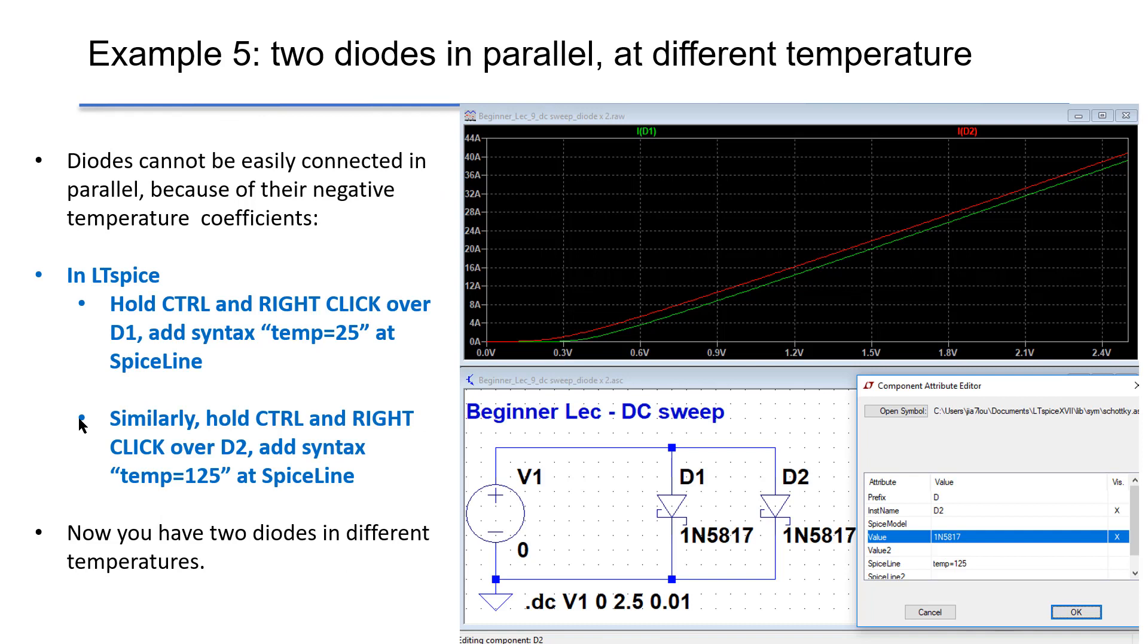This is the last example. We put two diodes in parallel, just different temperature. How to do that? In LT Spice, you can hold CTRL key and use the right click over D1. And we can add a syntax as temperature equals to 25 at the spice line, 25 degrees C for D1.